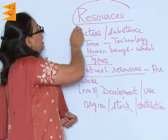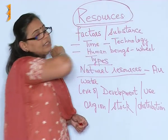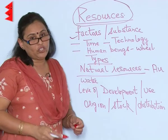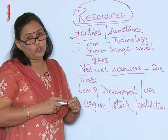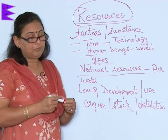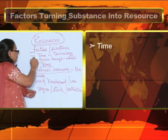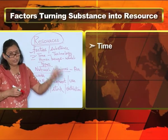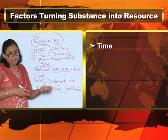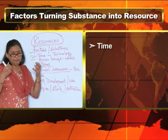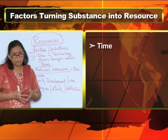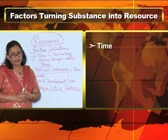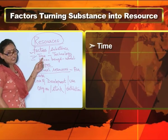So we have understood that a resource is something which has a utility. But what are the factors which turn a substance into a resource? One factor is time — over time, a substance can turn into a resource. For example, below the earth there have been lots of deposits which today have become mineral oil. Time has changed those substances into resources.